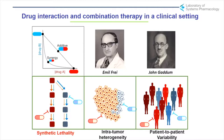These are the ideas that Emil Fry and John Gattam had — namely that the reason for doing combination therapy is intratumor heterogeneity, which seems very contemporary, and patient-to-patient variability. In fact, the independent mechanism should be seen as the null hypothesis against which drug interaction is tested. It's exactly like the Bliss and Löwe hypothesis for looking at that in preclinical studies.